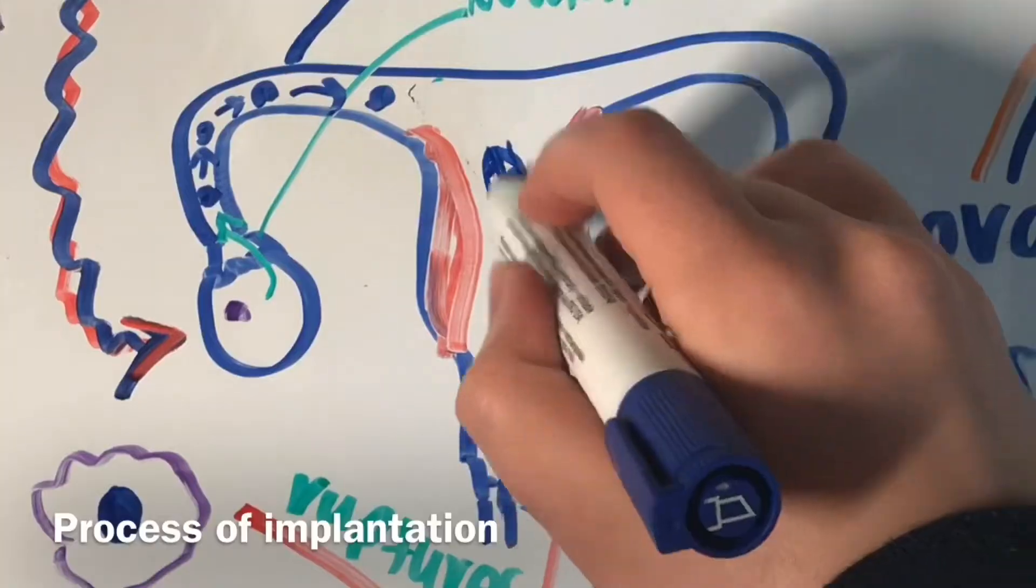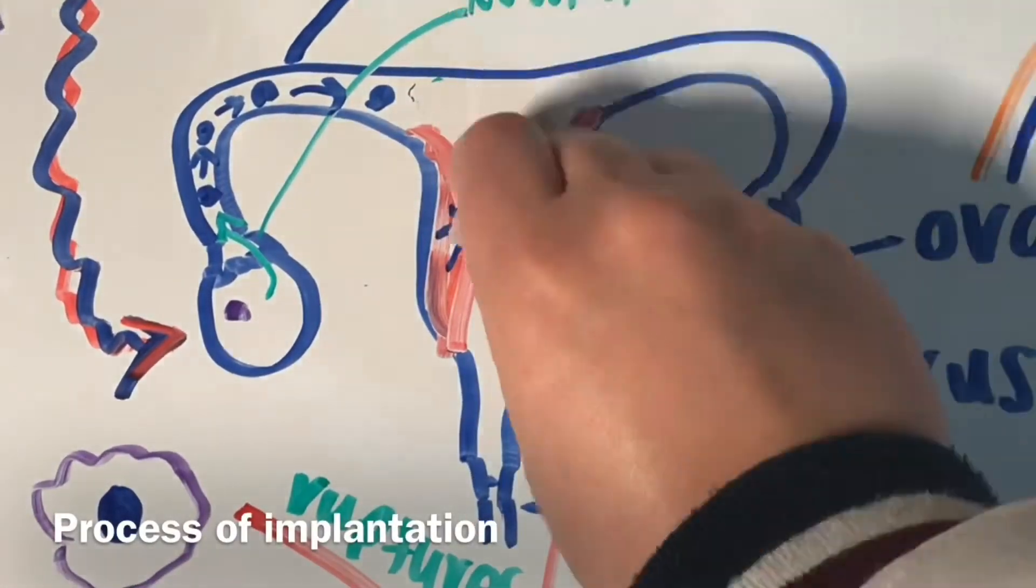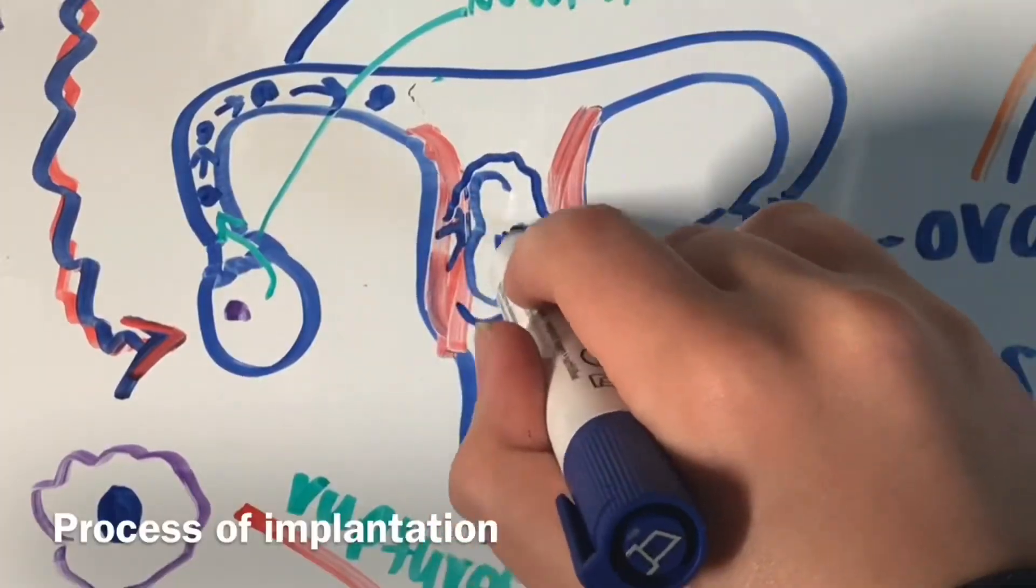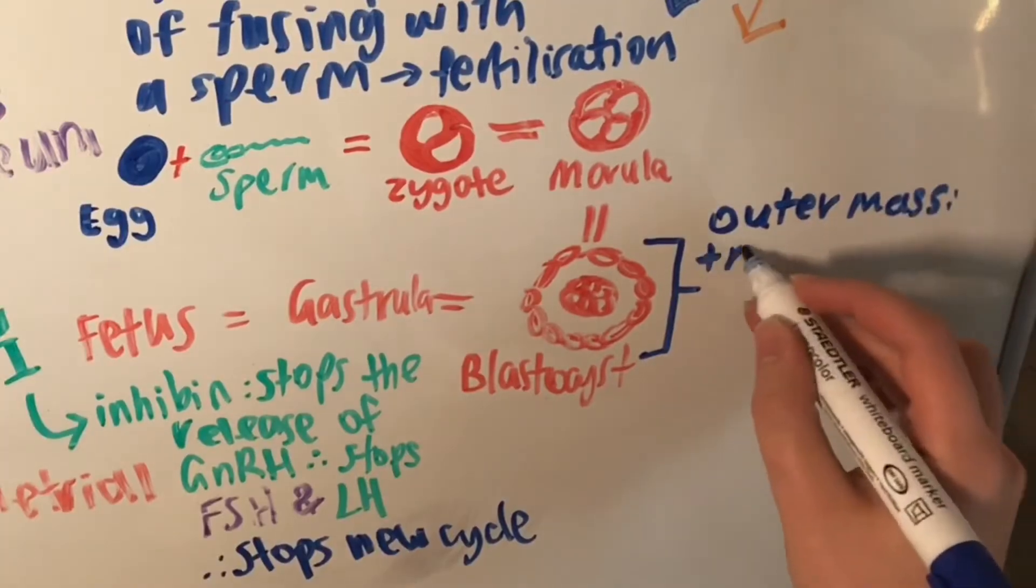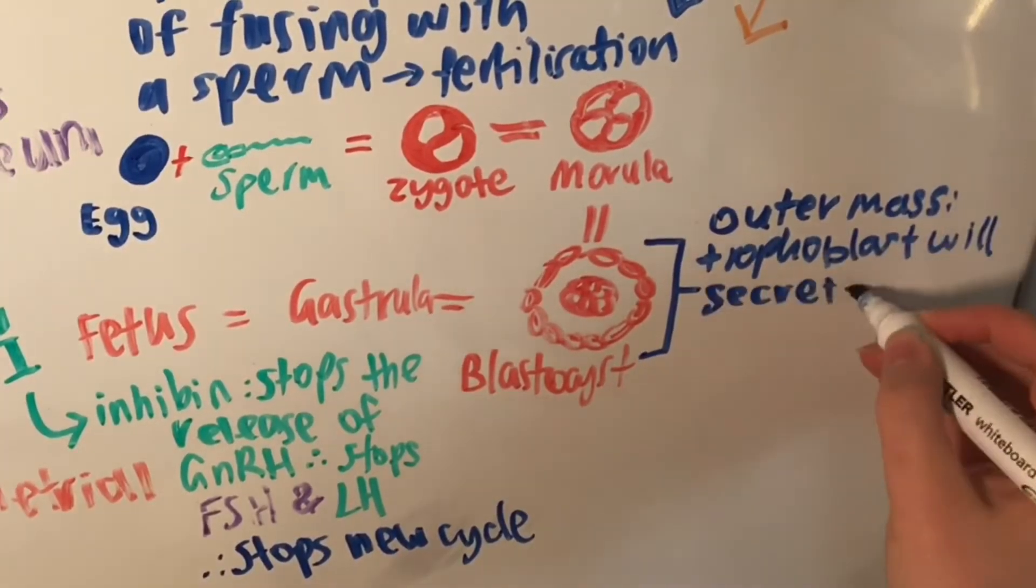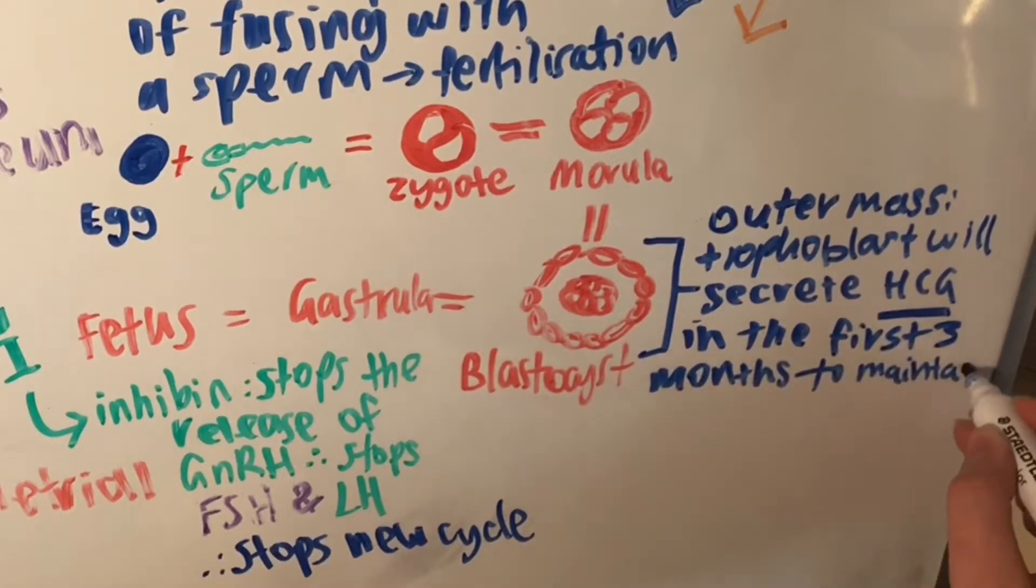The blastocyst will implant itself within the uterine wall. At this stage, the blastocyst has an inner mass which will form the fetus and an outer mass which will form the placenta. The outer mass, called a trophoblast, will secrete human chorionic gonadotropin hormone, HCG.